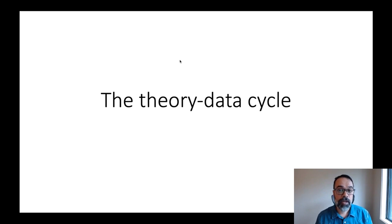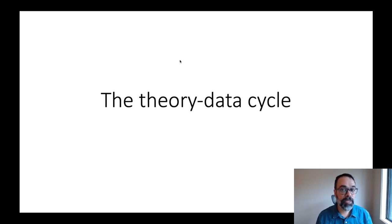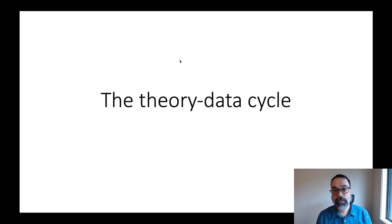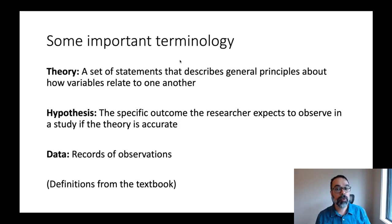In the last video I talked about some very big and abstract ideas about how science is done or should be done, coming from philosophy. In this video I want to talk about what your book calls the theory-data cycle, which is a little bit more concrete about what scientists actually do and how this looks in practice. I want to start with some important terminology from your textbook.